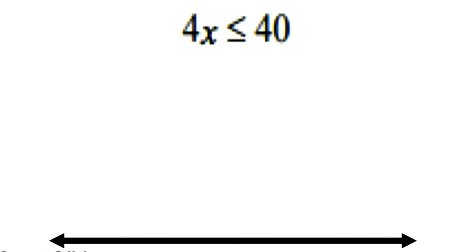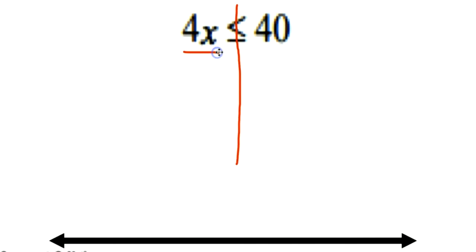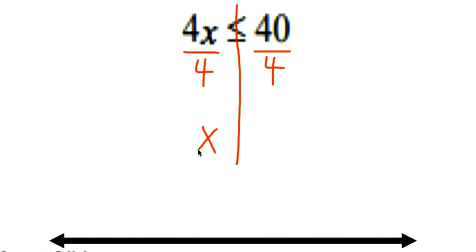The first example is 4x is less than or equal to 40. I'm going to draw my line just like I did when solving equations using addition and subtraction. The relationship between 4 and x is multiplication, so I'm going to undo multiplication with its opposite, which is divide by 4. Dividing by 4 on both sides: 4 divided by 4 is 1, leaving x. I did not divide by a negative, so the inequality symbol stays the same. 40 divided by 4 is 10.